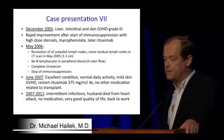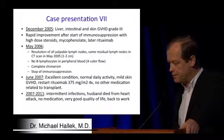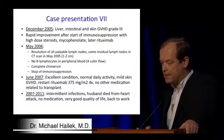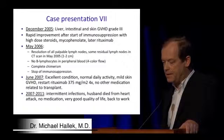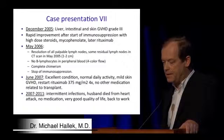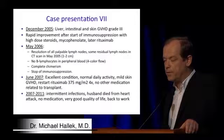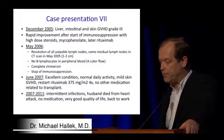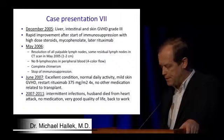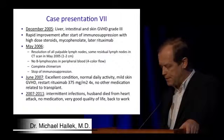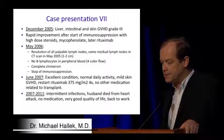She responded extremely well, had complete resolution of all lymph nodes, and we proceeded to a transplant — a reduced intensity conditioning regimen very close to what they are doing in Seattle — with usual immunosuppression and rapid engraftment, no problems whatsoever. In November she still had no GVHD, but had residual lymph nodes, so disease had not gone away. We decided to stop all immunosuppressants and withdrew cyclosporine. Upon withdrawal, she developed GVHD in December.